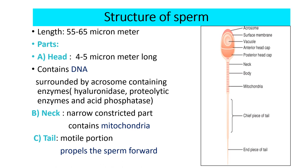Regarding the structure of sperm: spermatids first formed have the usual characteristics of epithelioid cells. Each spermatid elongates into a spermatozoon having a length of 55–65 micrometers. It is divided into three parts. The head is 4–5 micrometers long, contains DNA, and is surrounded by an acrosome containing enzymes like hyaluronidase, proteolytic enzyme, and acid phosphatase. The neck is the narrow constricted part and contains mitochondria. The tail is the motile portion that propels the sperm forward.